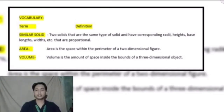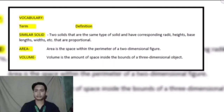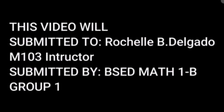Example 3: are the two rectangular prisms similar? Match corresponding heights, widths, and lengths. The congruent ratios tell us the two prisms are similar. Example 4: two similar cylinders are given. If the ratio of the areas is 16:25, what is the height of the taller cylinder? First, take the square root of the areas ratio to find the scale factor: √(16/25) = 4/5. Then set up the proportion to find h. Example 5: two spheres have radii in ratio 3:4. What is the ratio of their volumes? If we cube 3 and 4, we get the ratio of volumes. Vocabulary — similar solids: two solids that are the same type and have corresponding radii, heights, base, lengths, widths, etc. that are proportional. Area: the space within the perimeter of a two-dimensional figure. Volume: the amount of space inside the bounds of a three-dimensional object.